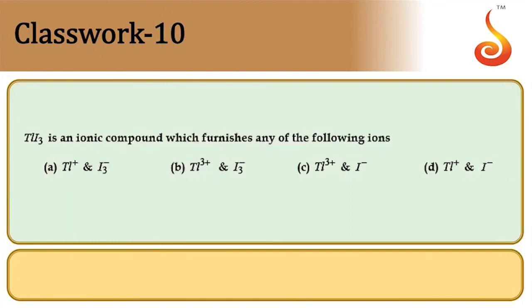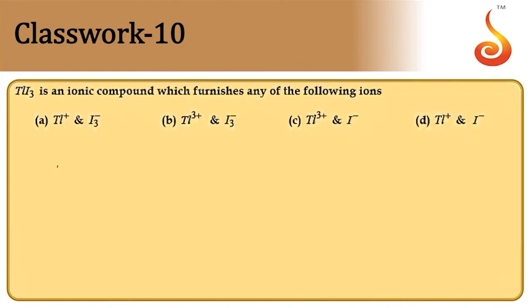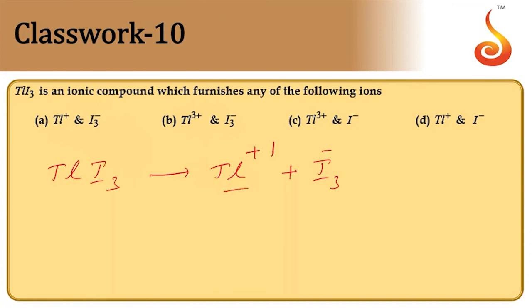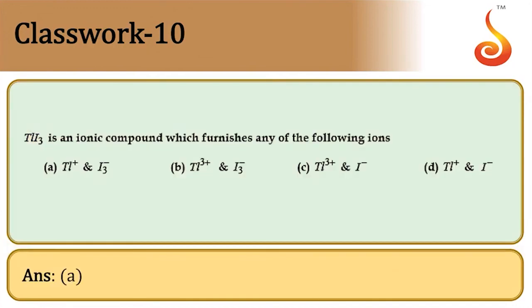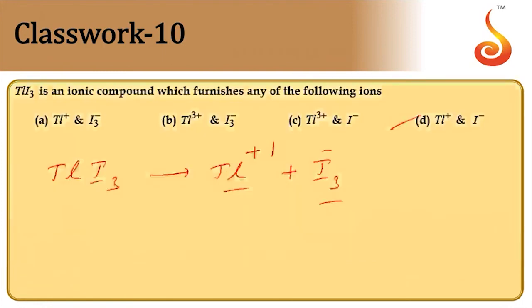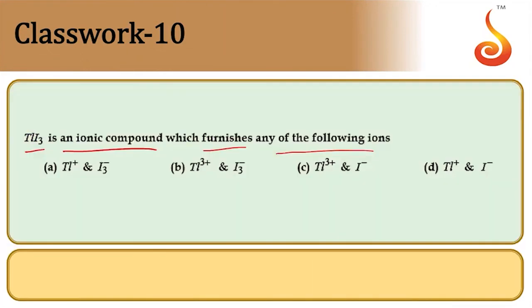TlI₃ is an ionic compound. Thallium always exhibits +1 oxidation state due to the inert pair effect. So TlI₃ ionizes to give Tl⁺ and I₃⁻. Answer is option A (Tl⁺ and I₃⁻).